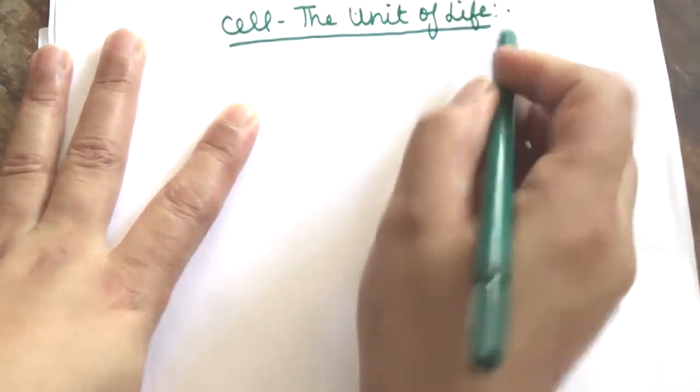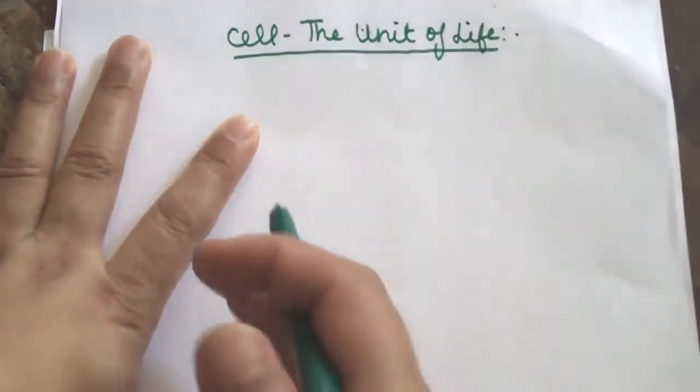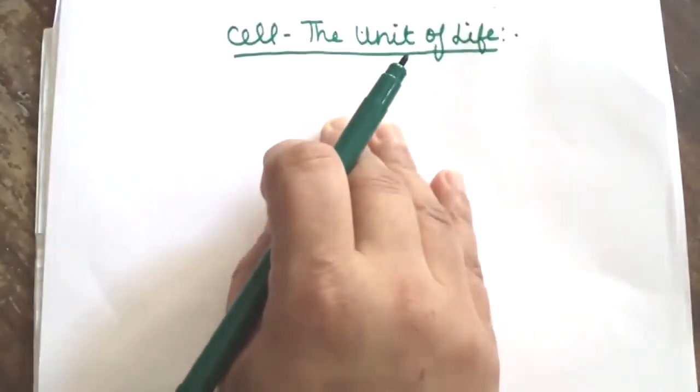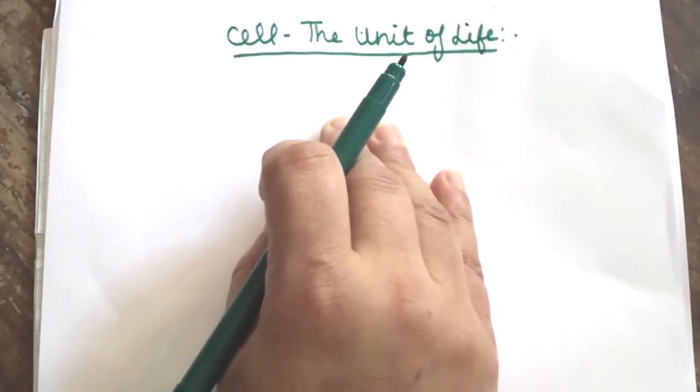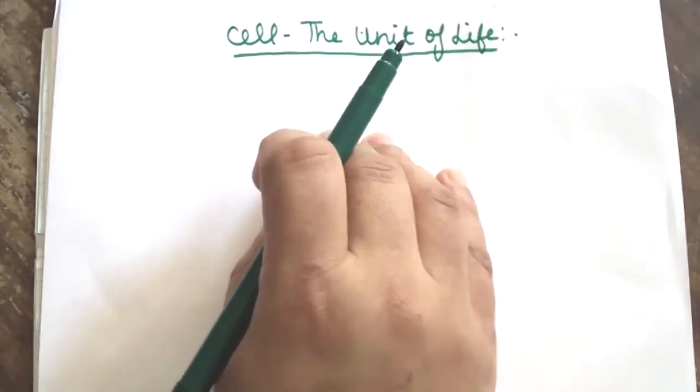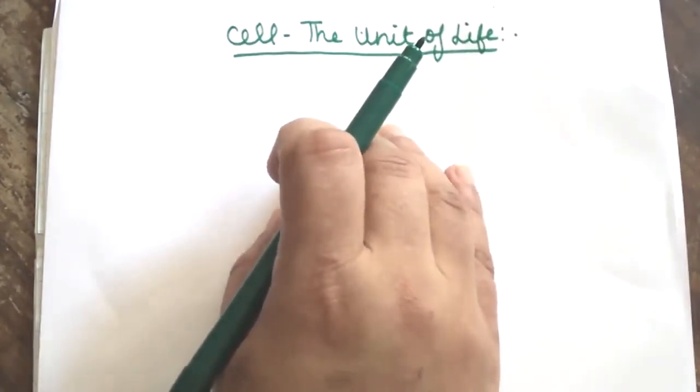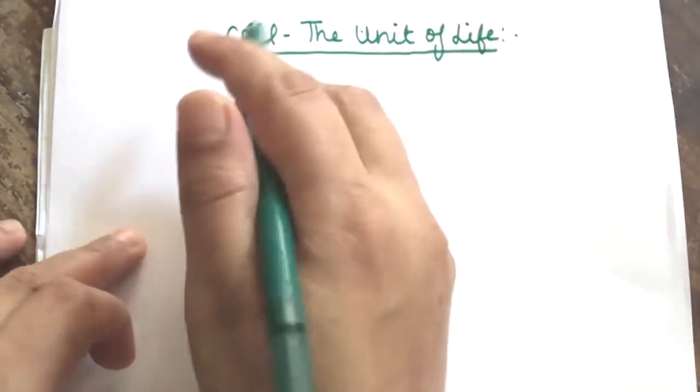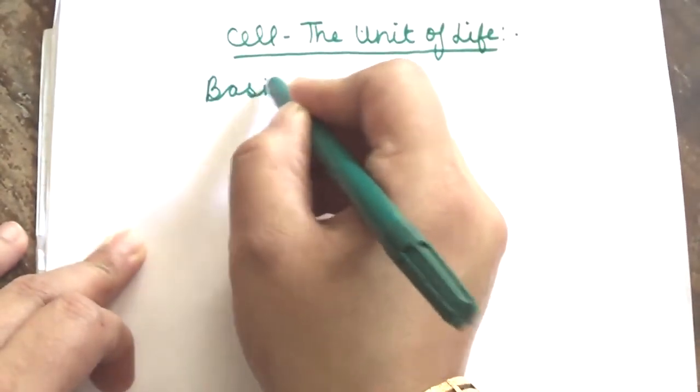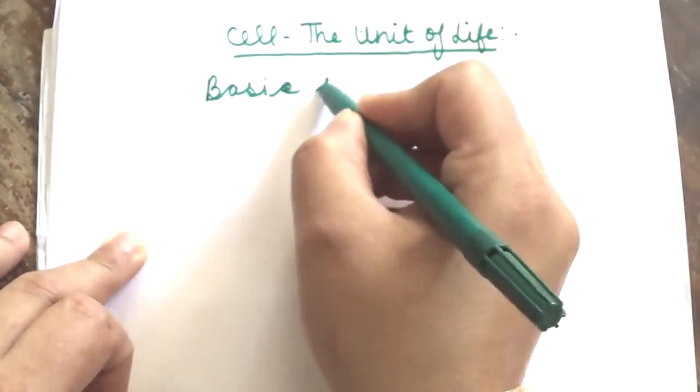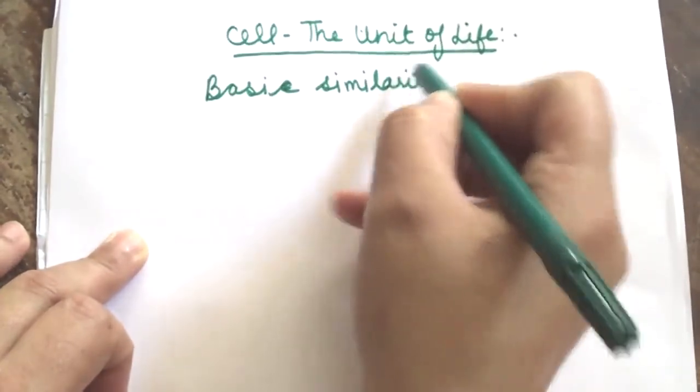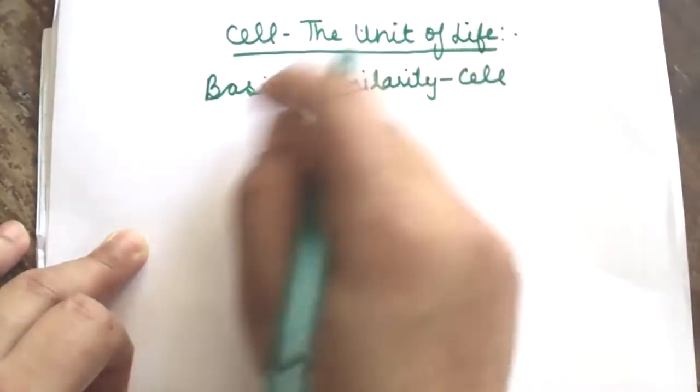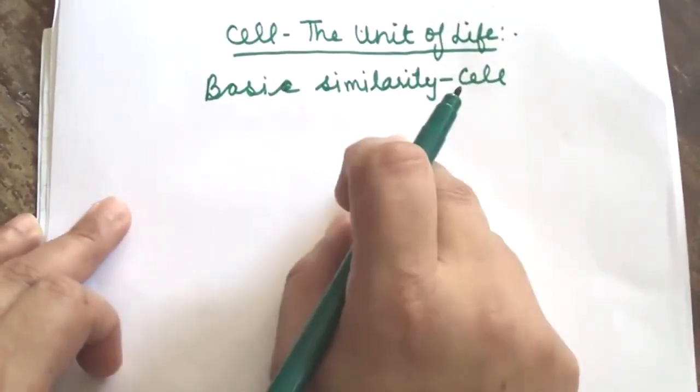Students, you all know very well that Cell is the Structural and Functional Unit of Life. In your lower classes you have read about the Cell. The Earth is inhabited with millions of living organisms. All these organisms including human beings are different from each other in size, shape, and various other features. In spite of the huge diversity observed among all life forms, there is a basic similarity. That is Cell.